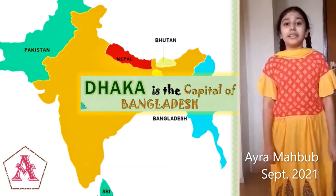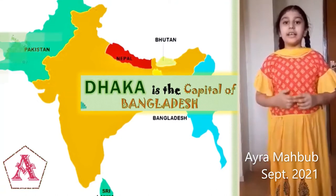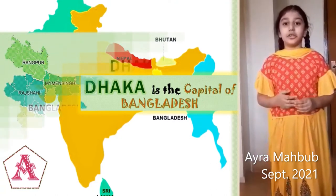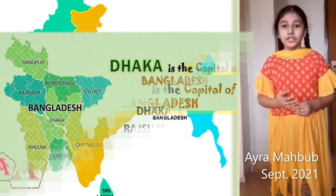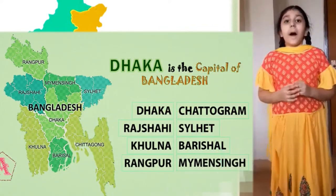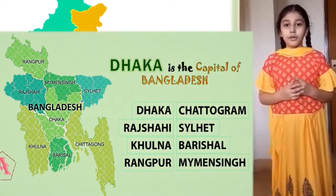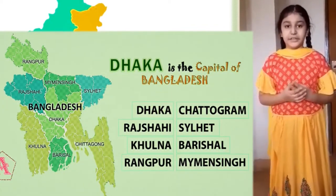Bangladesh has eight divisions: Dhaka, Sylhet, Chattogram, Barishal, Mymensingh, Khulna, Rangpur, and Rajshahi.